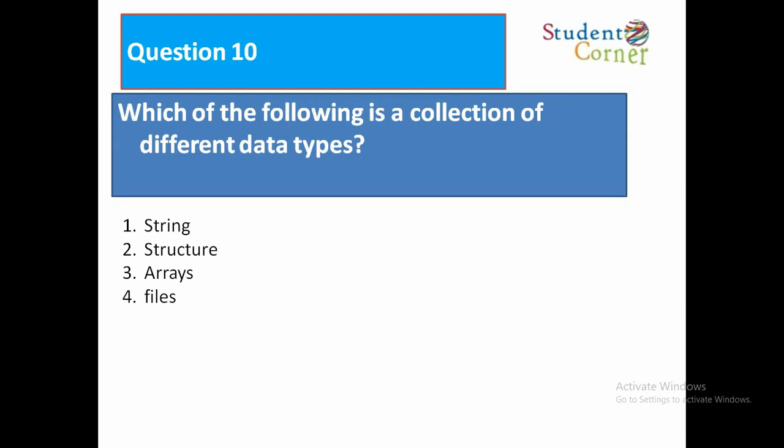Which of the following is a collection of different data types? 1, string. 2, structure. 3, array. 4, files. Obviously, structures. Why? Because structure is a heterogeneous collection of data. String is a collection of characters. Array is a collection of sequence of data, a homogeneous collection of data. Files is a collection of data.